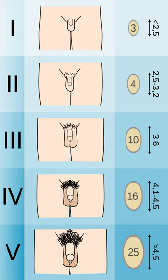Tanner 4, Adult-like hair quality, extending across pubis but sparing medial thighs, 13 to 15.